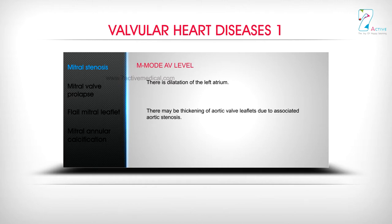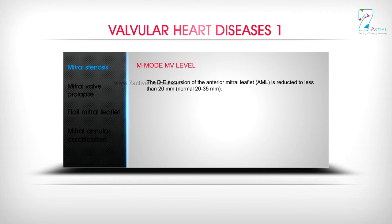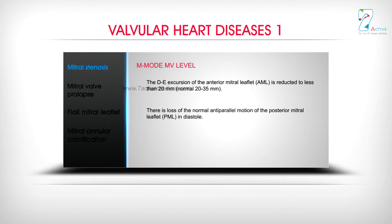There may be thickening of aortic valve leaflets due to associated aortic stenosis. M Mode MV Level: The DE excursion of the anterior mitral leaflet (AML) is reduced to less than 20 mm (normal 20–35 mm). There is loss of the normal anti-parallel motion of the posterior mitral leaflet (PML) in diastole.